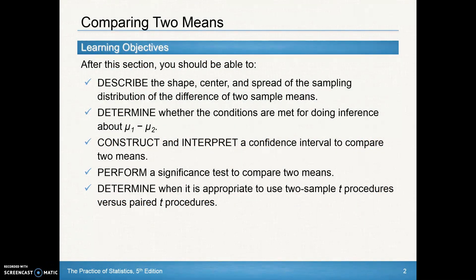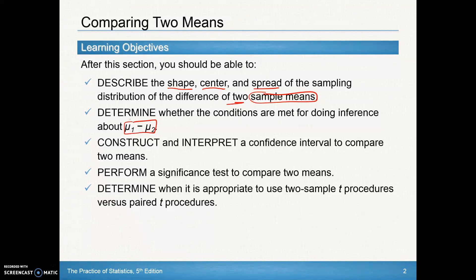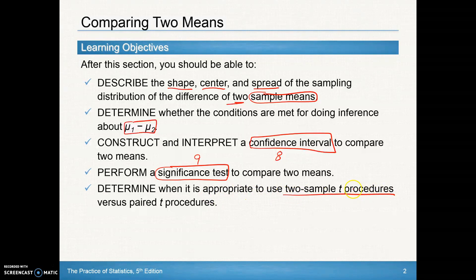In this section we should be able to describe the shape, center, and spread of a sampling distribution of the difference of two sample means. We'll determine whether the conditions are met for doing inference about the difference in means between two populations. We'll construct and interpret a confidence interval, which goes back to chapter 8, perform a significance test referring back to chapter 9, and determine when it's appropriate to use two-sample T procedures versus paired T procedures. Paired T procedures is what we did in chapter 9.